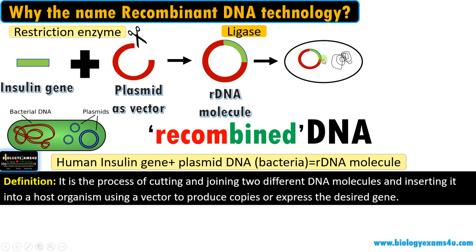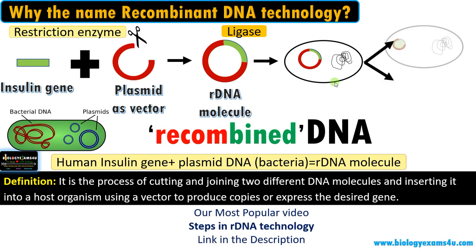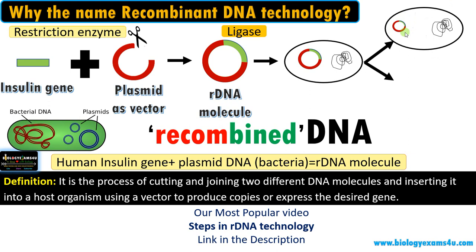Now we have the recombinant DNA molecule inside the bacterium or host for two reasons. First, this recombinant DNA molecule inside the host will replicate and make copies of that particular gene, which is further used for research or DNA sequencing. So the first purpose is making copies of the desired gene.